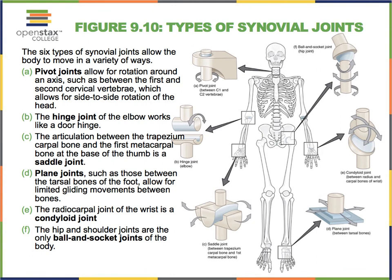We can further classify the synovial joints into six smaller groups. These groups are created based on the articular surfaces of the meeting bones. I'm going to visit a couple of these synovial joints. I've also added great videos on my YouTube channel that cover each joint type with three-dimensional images so you can clearly visualize how they work.